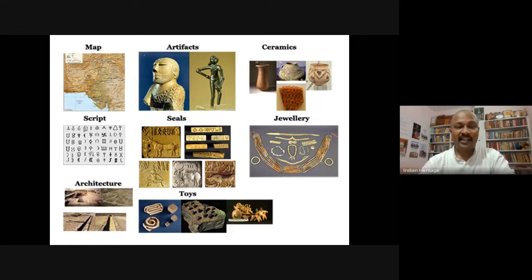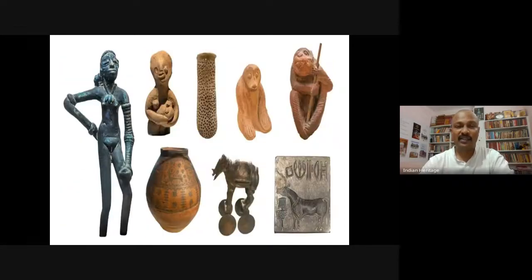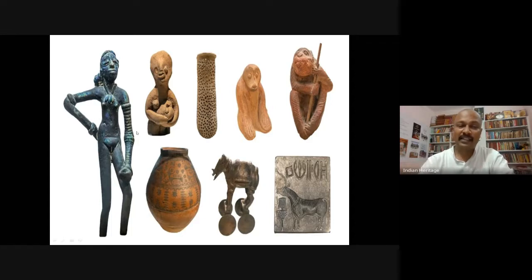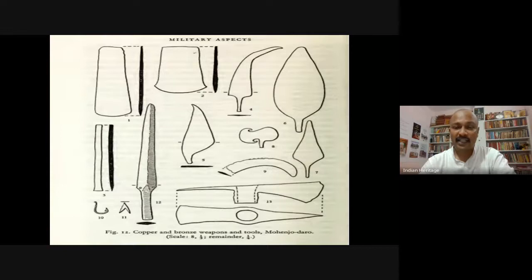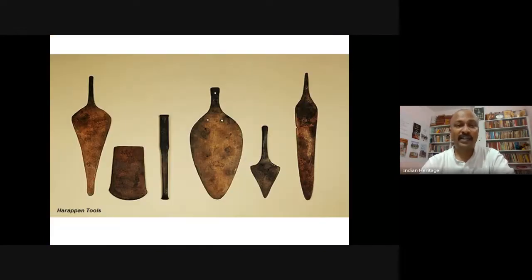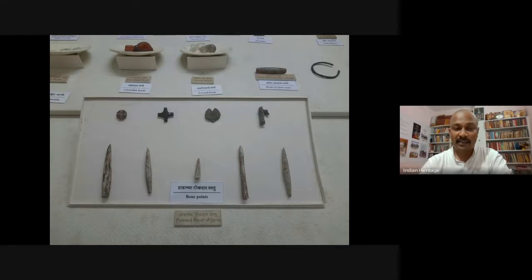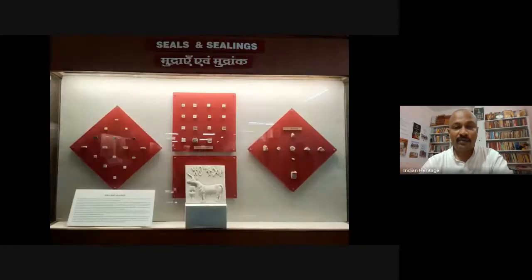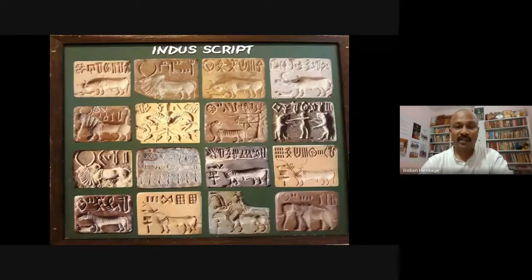Artifacts include ceramic scripts, seals, jewelry, architecture items, and toys. Among the notable bronze sculptures is the Dancing Girl. There are also weapons used for military defense or hunting, tools possibly used for architecture, and bone points from the same period. We can now see seals — mudra and mudrang — interesting seals from the Indus Valley Civilization in different types, some with animal figures and script.